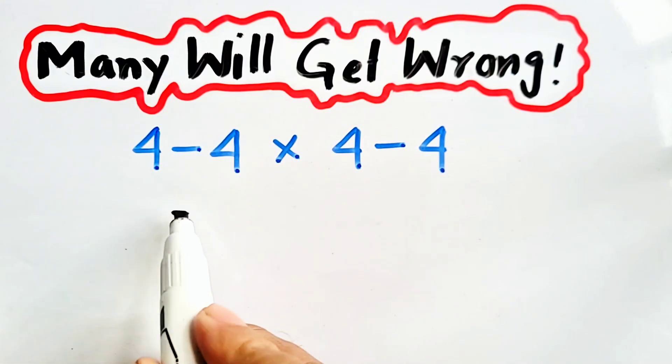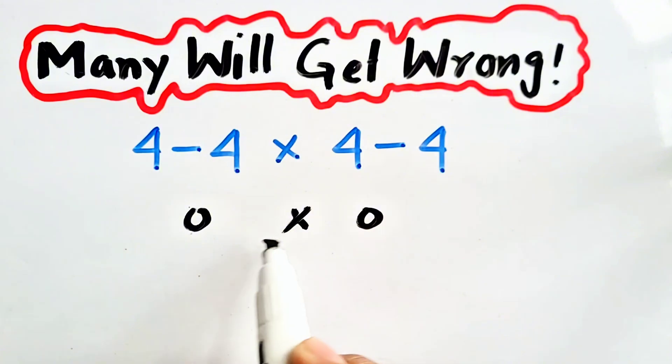Respectable audience, 4 minus 4 is 0, 4 minus 4 is 0. 0 times 0 will be equal to 0. 0 will be our answer, but 0 is not the correct answer because there is a little bit of a mistake that we have made.